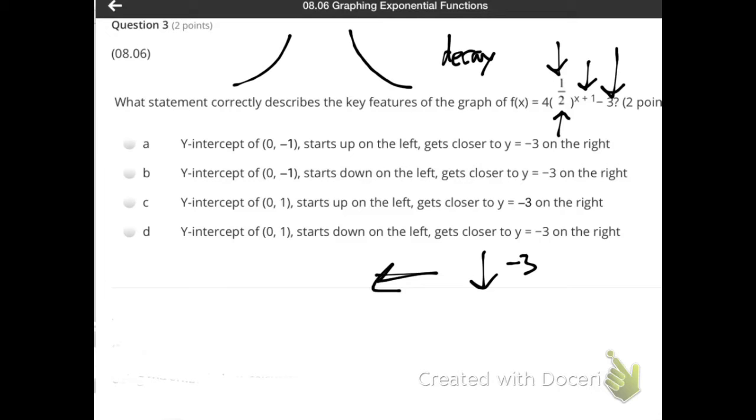So it goes to the left one space and this negative three shows that it's going to shift down. Your asymptote is going to be at negative three. It's going to shift down three. Now, let's see what's happening here. It says the y intercept is at zero negative one, zero negative one. Some of these say zero one, zero one.